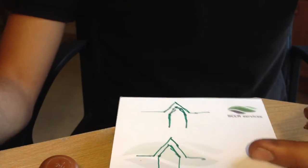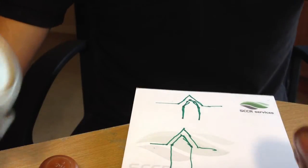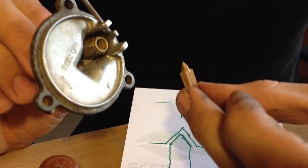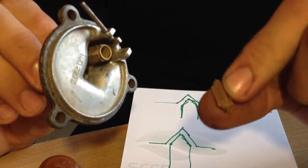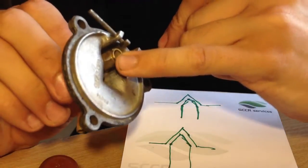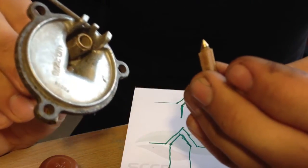So what we're going to do, we're going to go onto the internet. We'll go to our local mini specialists and we're going to track down the correct needle and seat for our carburettor. And we're going to replace the seat and the sprung loaded needle.